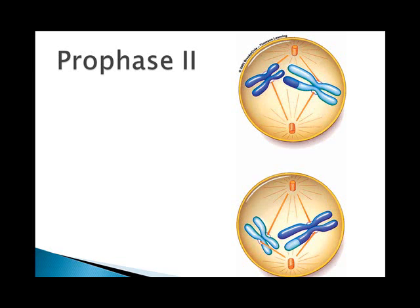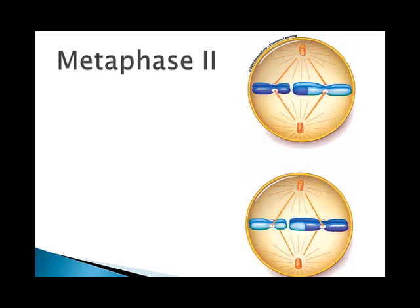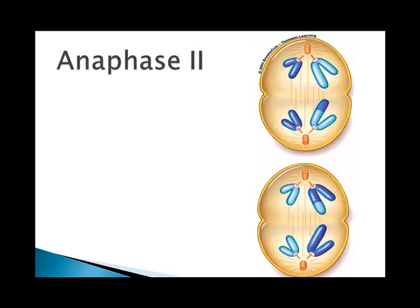And then we go right into prophase two. In some cases the cell cytoplasm doesn't even divide, but sometimes it does. The process continues moving the chromatid pairs toward the center of the cell. They're in the center in metaphase two. And in anaphase two, the chromatid pairs are then split and move to the individual chromosomes toward the opposite poles.